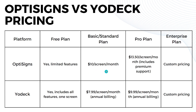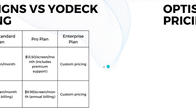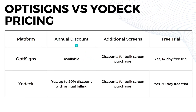Yodeck offers its standard plan for approximately eight dollars per screen per month with annual billing. For the pro plan, OptiSigns offers it at thirteen dollars and fifty cents per screen per month, which includes premium support, while Yodeck offers it at ten dollars per screen per month with annual billing. For the enterprise plan, both platforms offer customizable pricing.